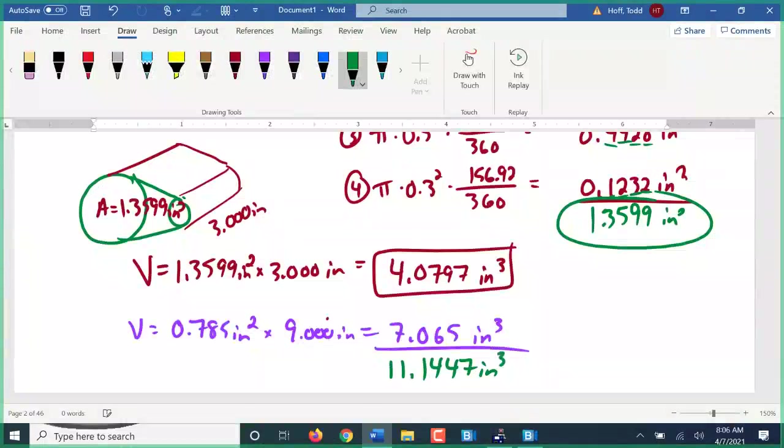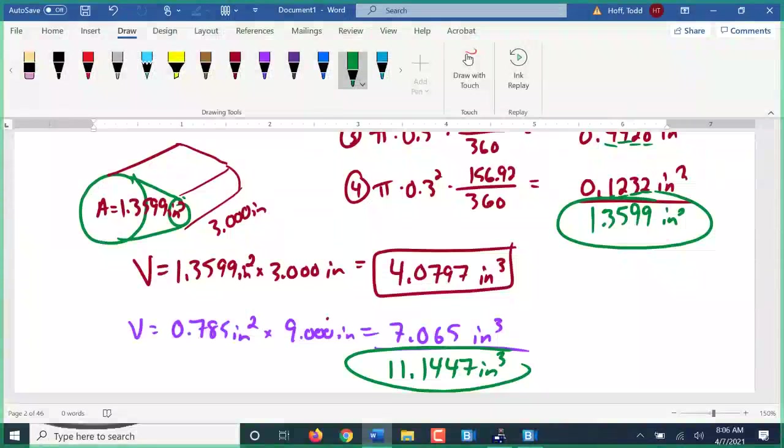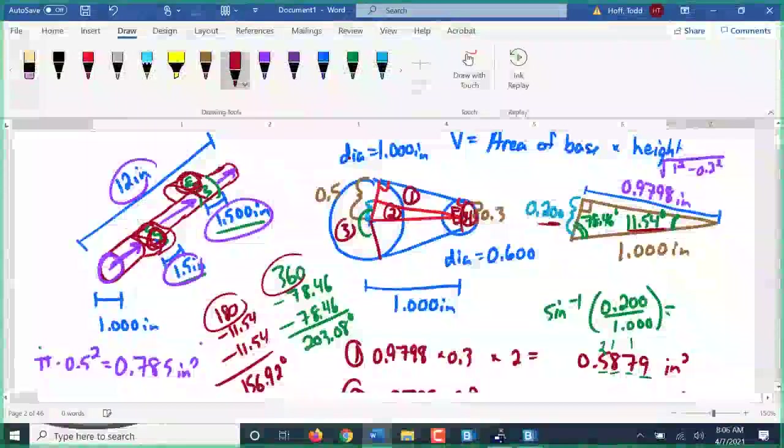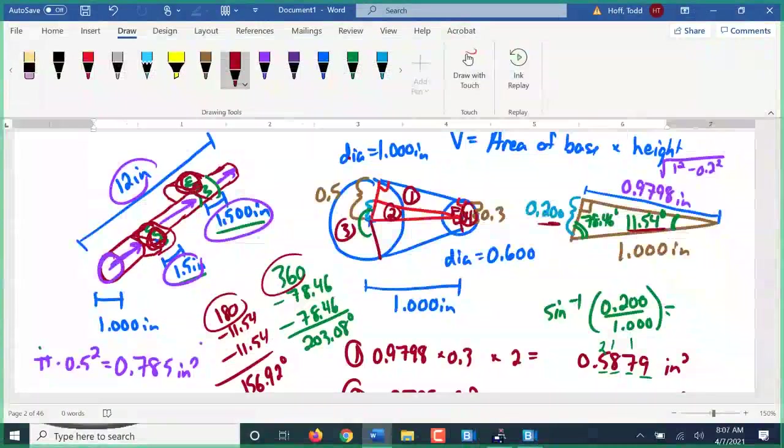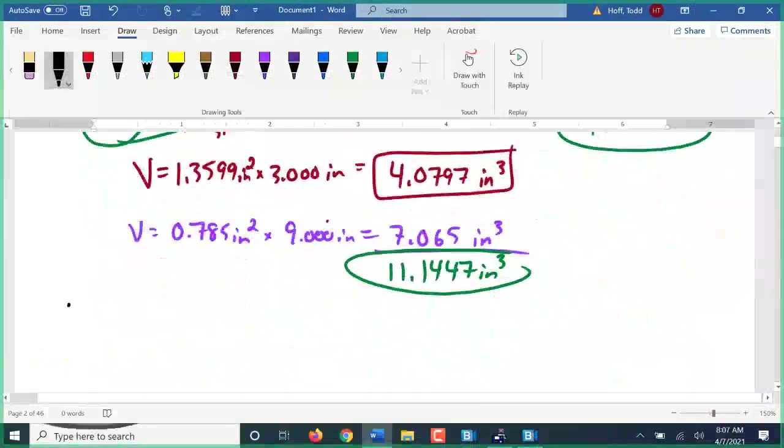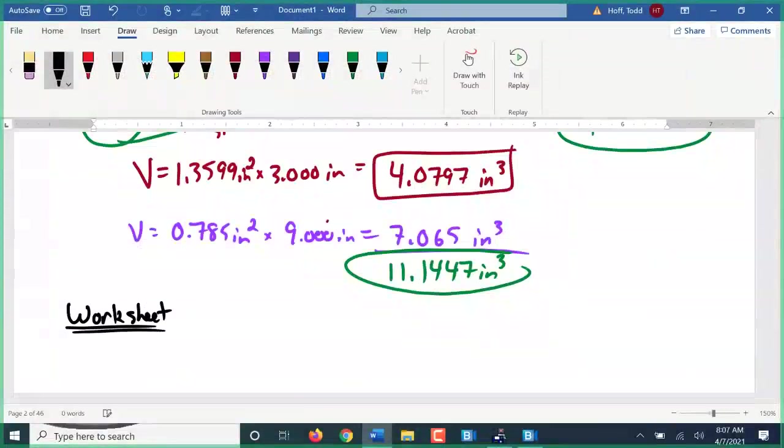0.785 times 9, and this is 7.065 cubic inches. Giving me a volume, a total volume, of 11.1447 cubic inches. So now if I know my density of that metal, I can multiply by the density and I would have weight. Does that make sense? That's a very common strategy when you have pieces like this, cut pieces out like the cams, put them back together if they're the same shape.